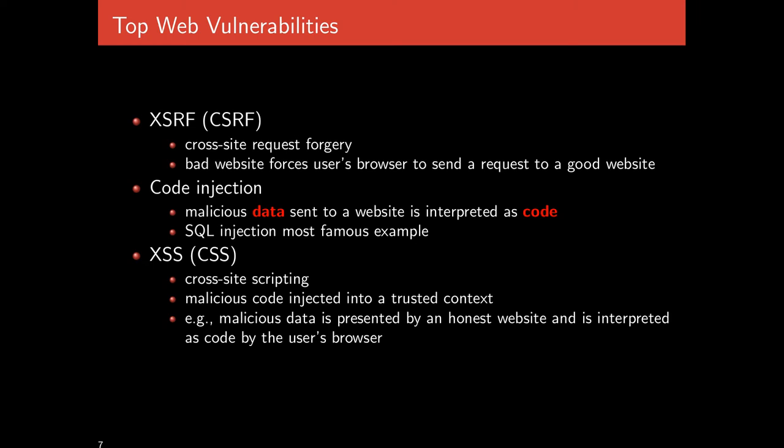The second class is Code Injection, where data is sent from the client to the server but, because of a bug, that data is interpreted as code. SQL Injection attacks are the most famous example — if the input string is not correctly sanitized, control characters like a closing quote can end a string, and everything after it would no longer be treated as part of the string.